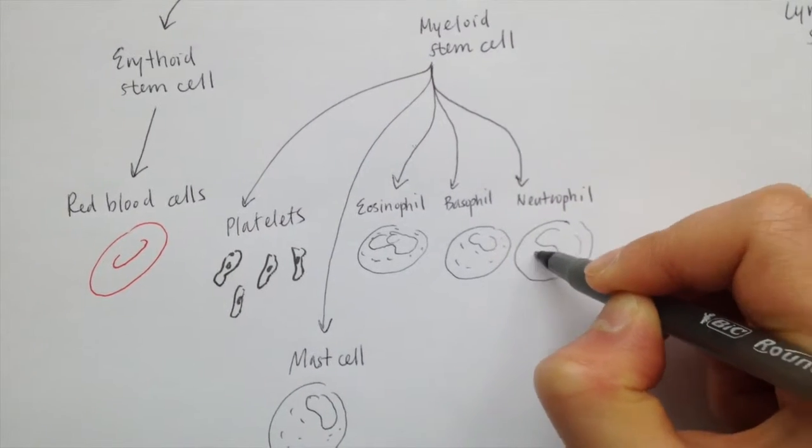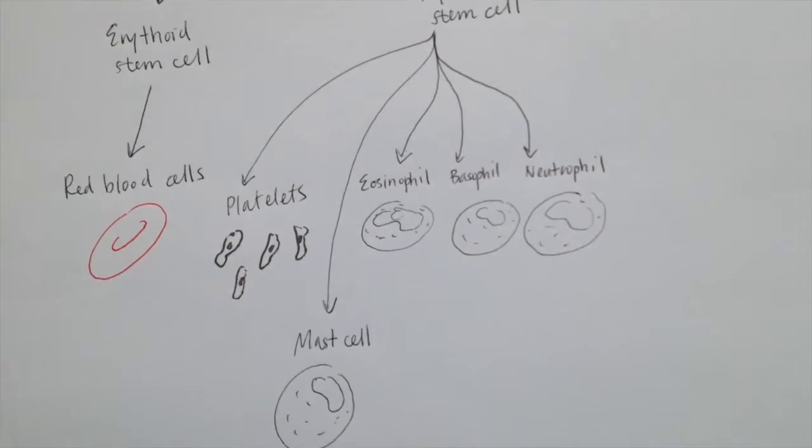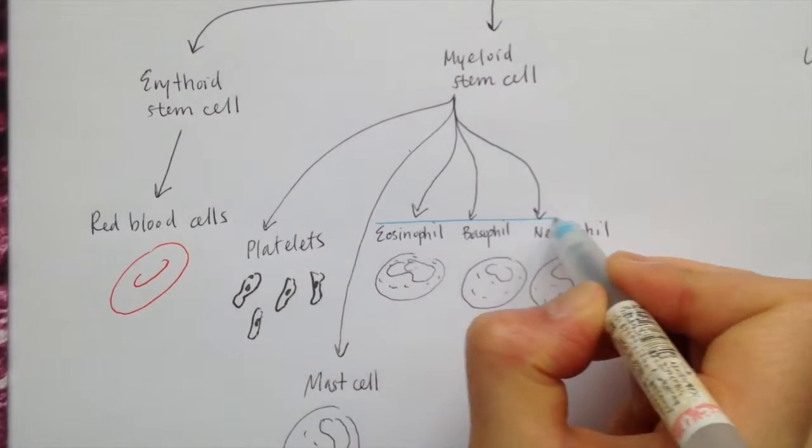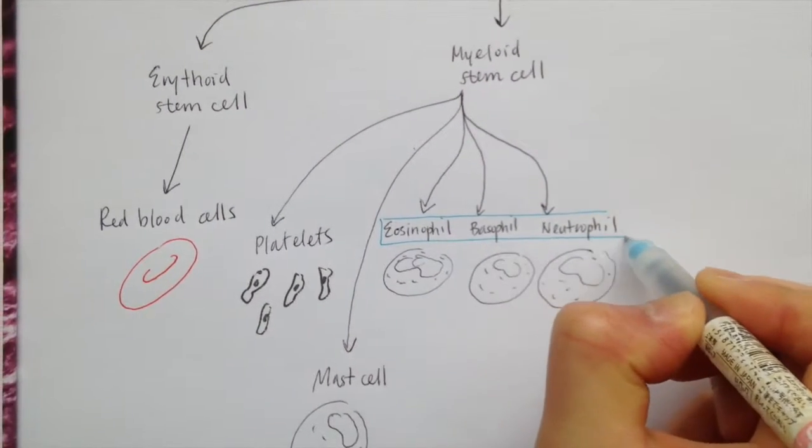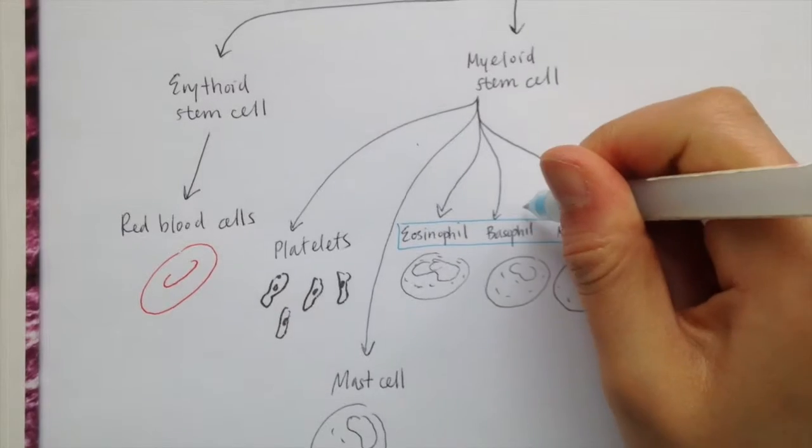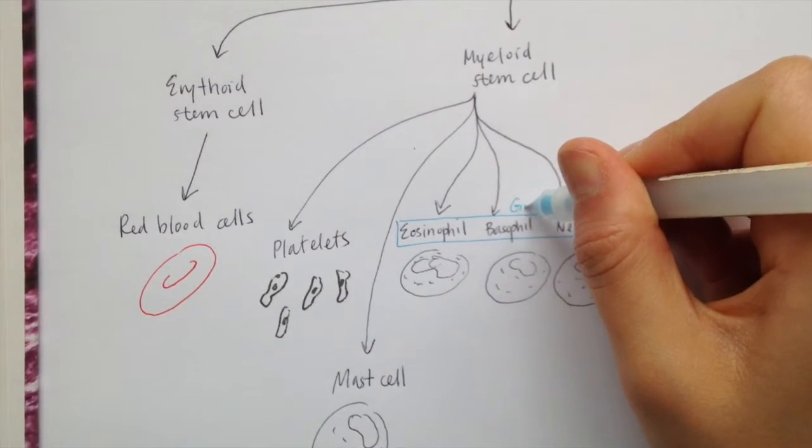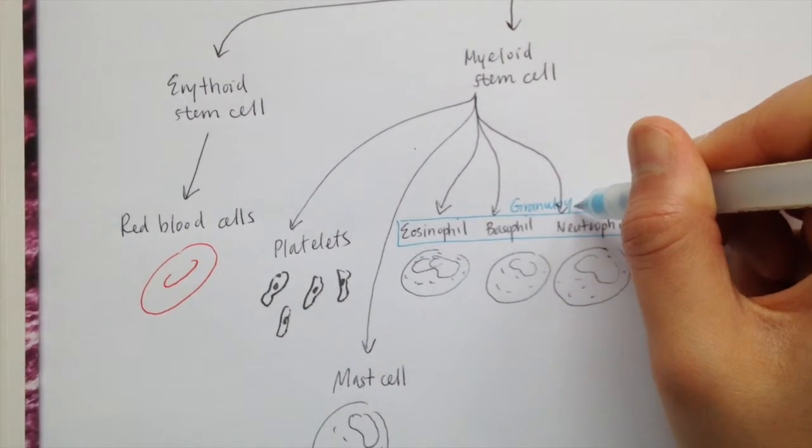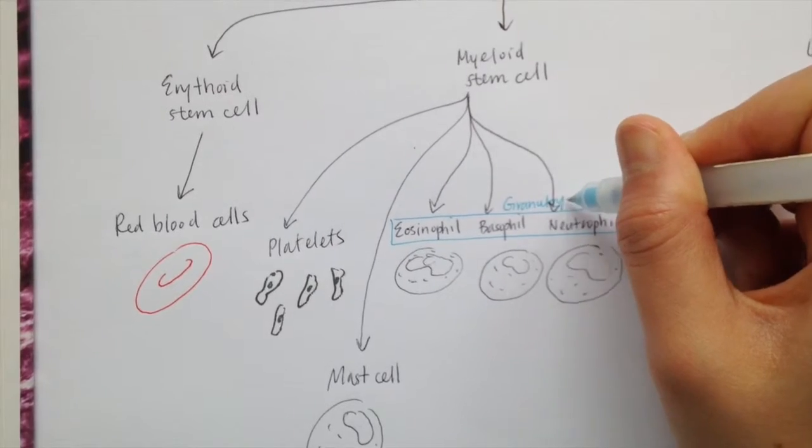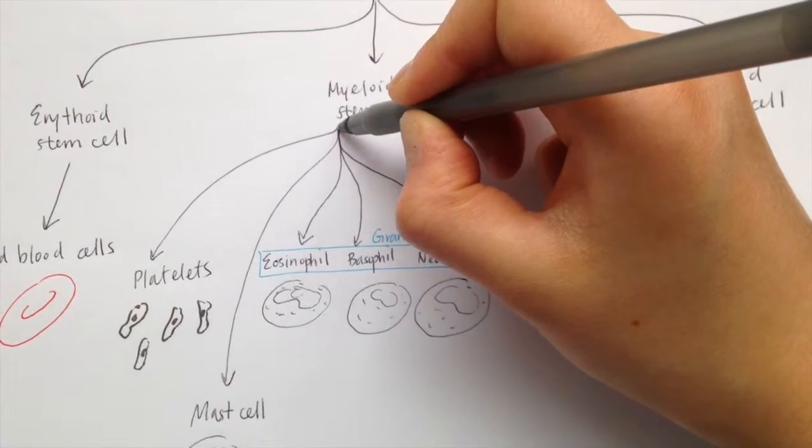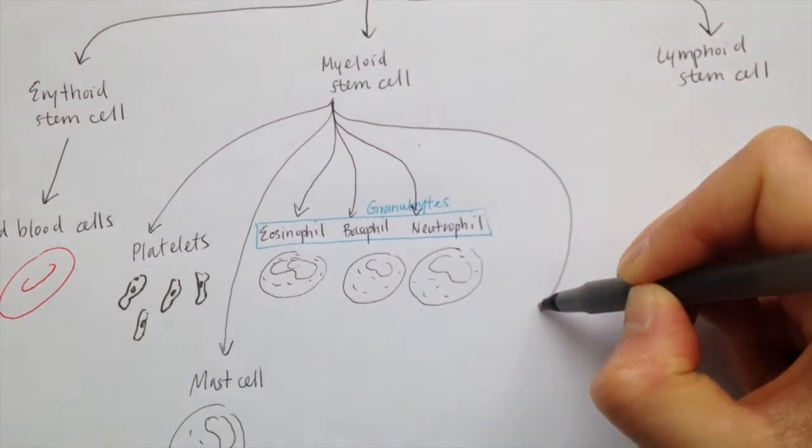Neutrophils are also phagocytic cells. They're the most abundant white blood cells in our bodies, and they contain different hydrolytic enzymes like lysozyme, peroxidase, or defensin. The neutrophils will phagocytose pathogens and then break them down with those hydrolytic enzymes. They circulate in the blood and will move to the area of infection when they're needed.